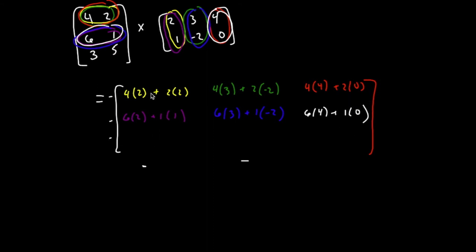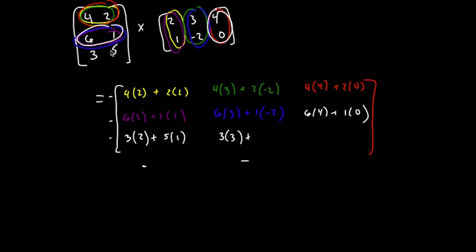Row three, column one — I'm looking at row three, column one: three times two, plus five times one. Row three, column two: three times three, plus five times negative two. Row three, column three: three times four, plus five times zero.